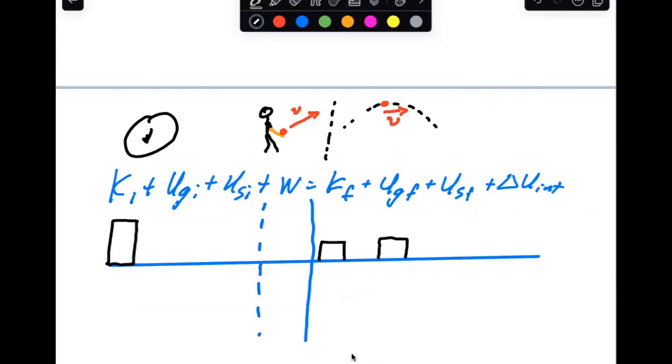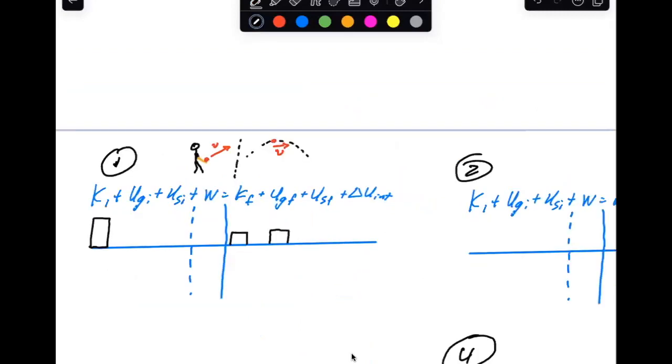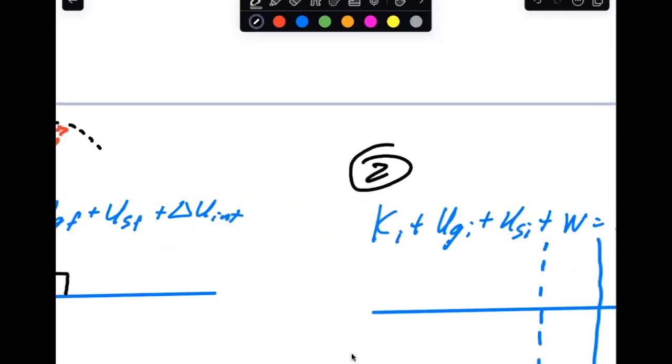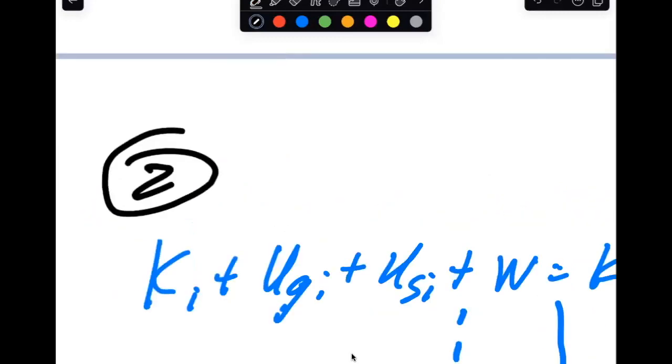Next question: An archer pulls back on the string of a bow and arrow, stretching the bow. So for the bow and arrow, here's your sketch.